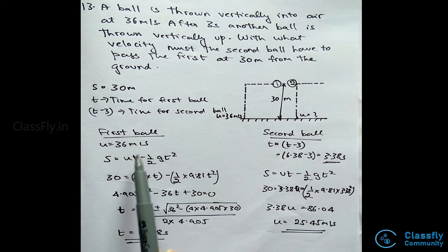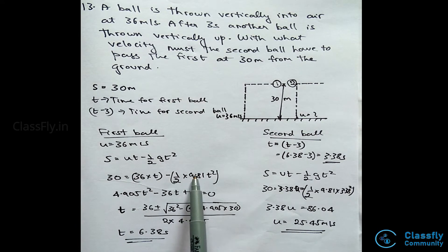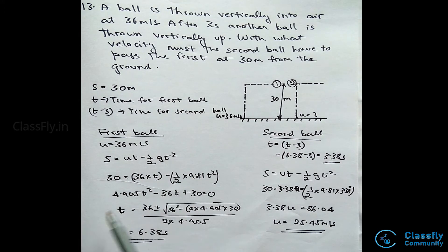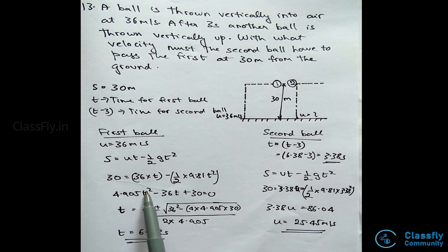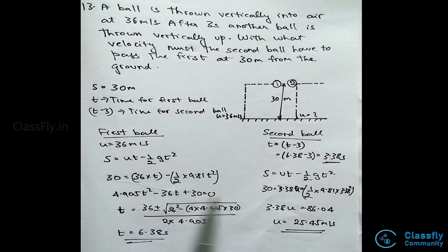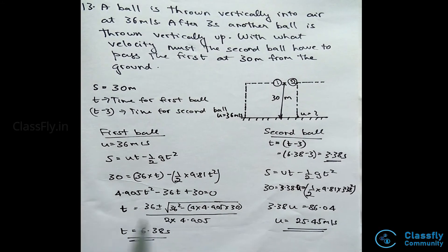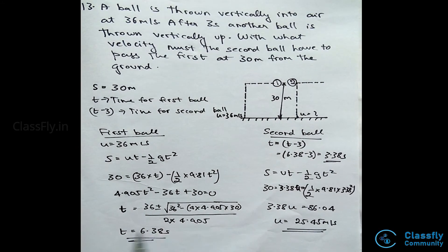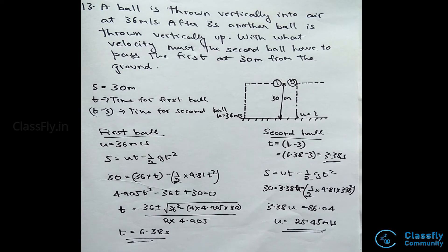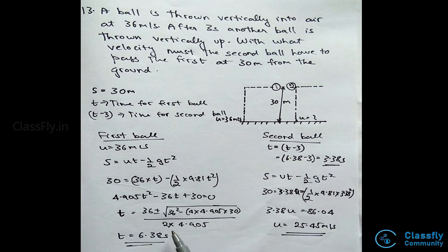Substituting the values, we have 30 equals u, that is 36 into t, minus half into the value of g, that is 9.81 into t square. Hence, we have 4.905 t square minus 36 t plus 30 equals 0. Upon solving the quadratic equation, we have the value of t to be 6.38 seconds.